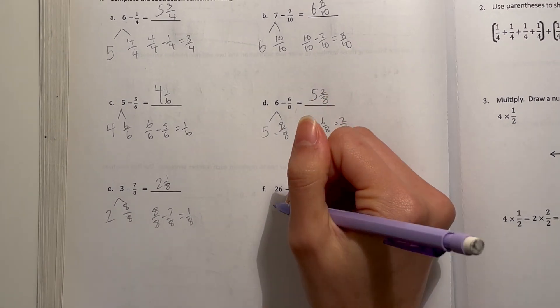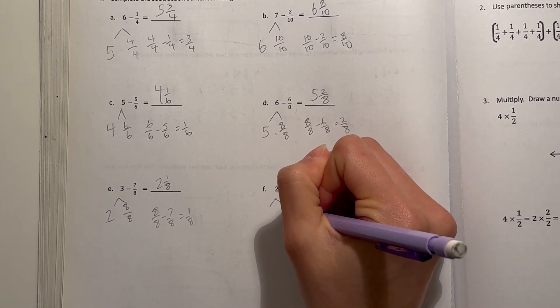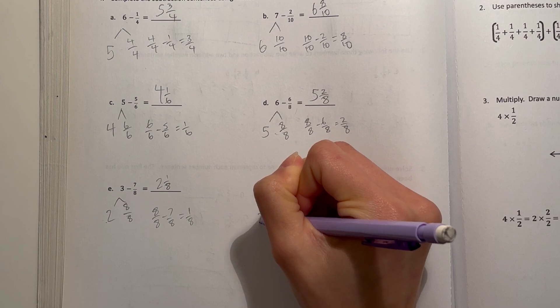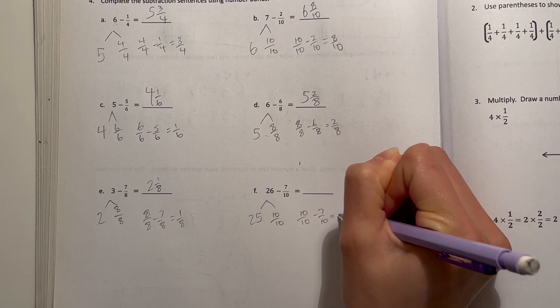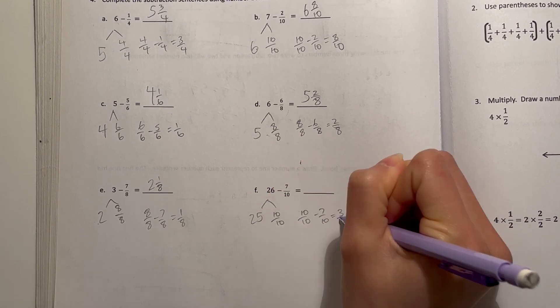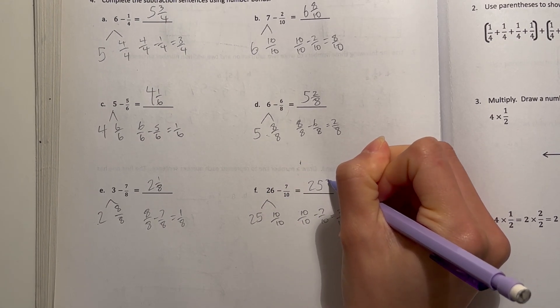All right, F, 26 minus 7 tenths, take out 10 tenths, that's 25 left over. 10 tenths minus 7 tenths is 3 tenths. 25 plus 3 tenths is 25 and 3 tenths.